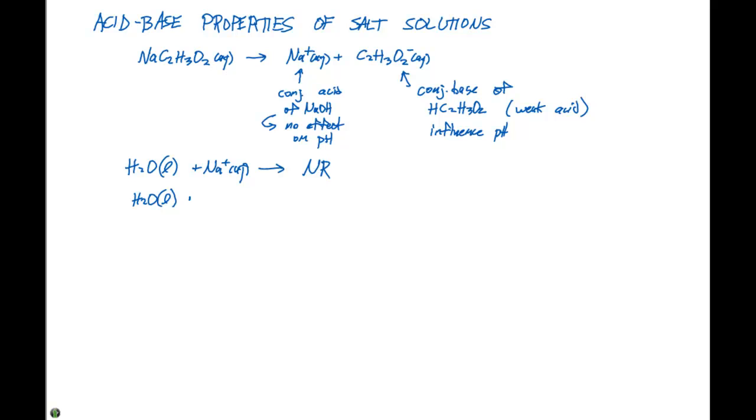On the other hand, if we take water and place acetate ions in that solution, we're going to have an equilibrium with HC2H3O2 plus OH minus. Here, our OH minus ions are going to make the solution basic, and our pH is going to be greater than seven. So this particular salt solution is going to be basic.